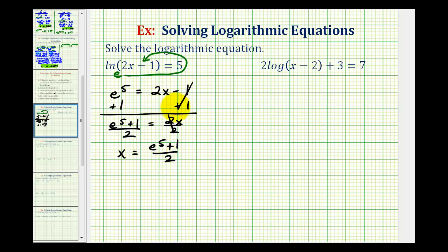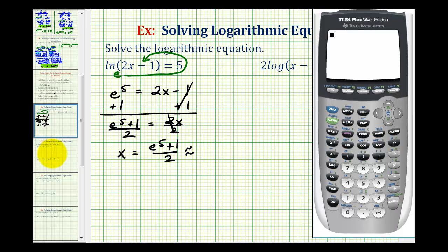Let's also get a decimal approximation, so we'll use the calculator. The numerator is e to the fifth plus one. Second natural log brings up e to the power five plus one, divided by two. So x is approximately 74.7066.